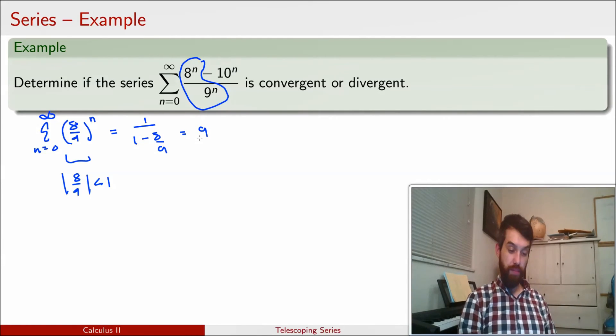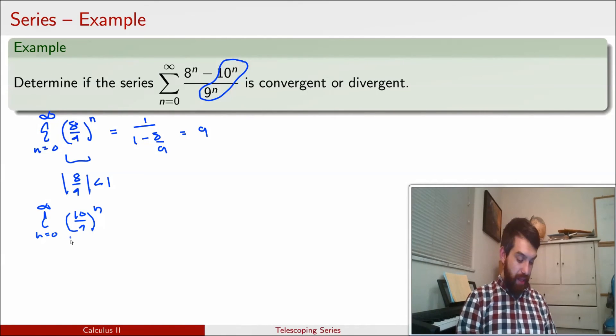Likewise, we can deal with the other side here. We can deal with the 10 divided by 9 all to the power of 9. So let's do that one. Sum N is equal to 0 to infinity of 10 divided by 9 all to the power of N. Well, in this case, my ratio of 10 ninths in absolute value, this is something which is greater than 1, and so it's going to diverge.